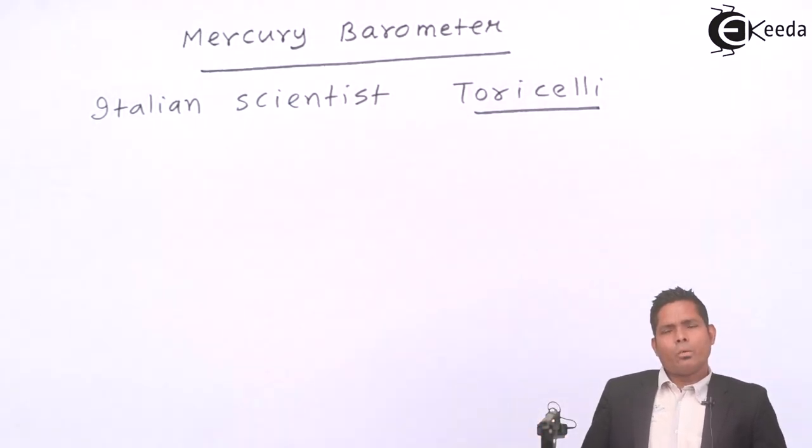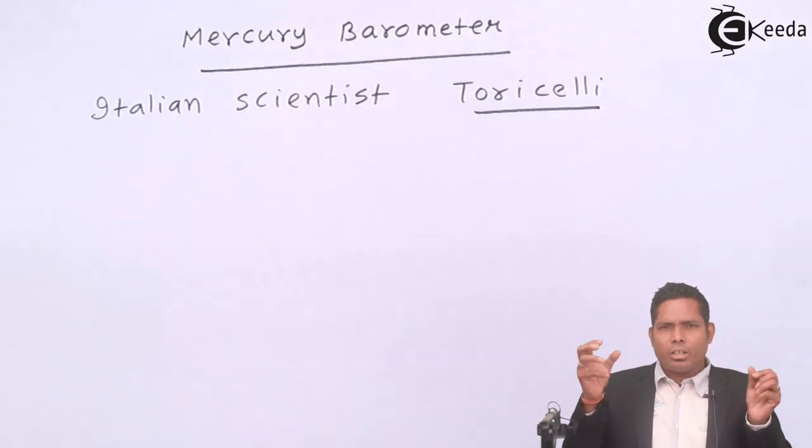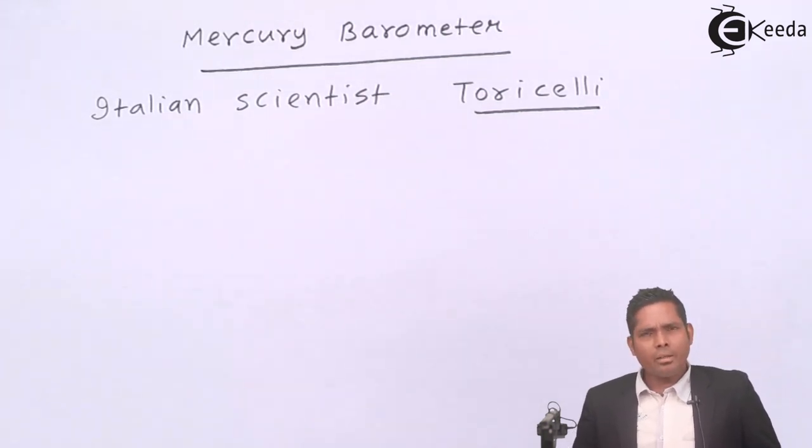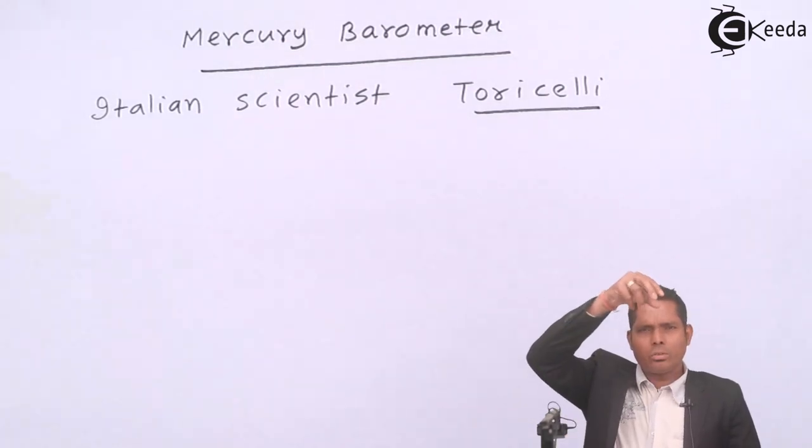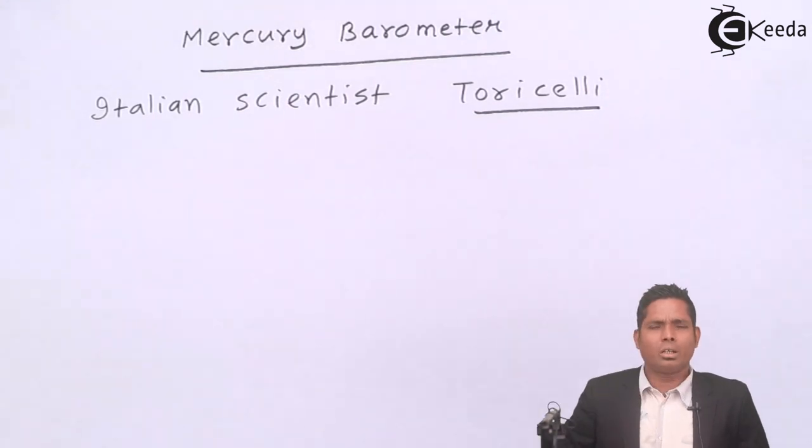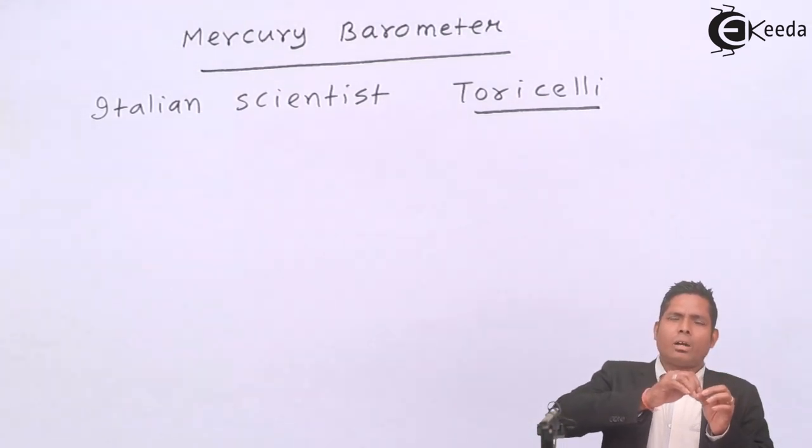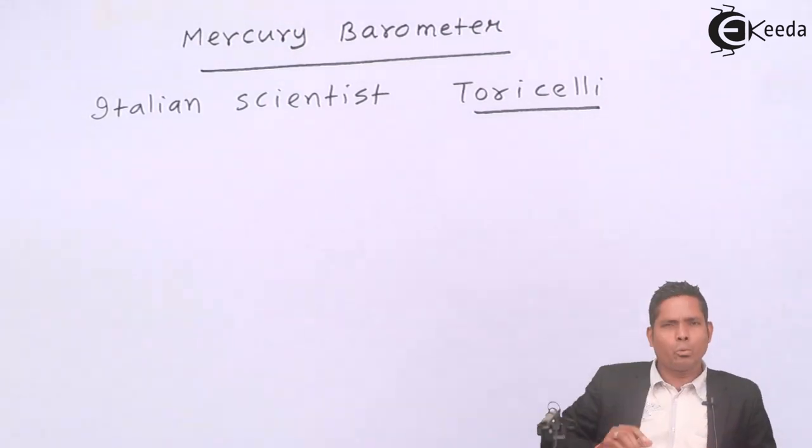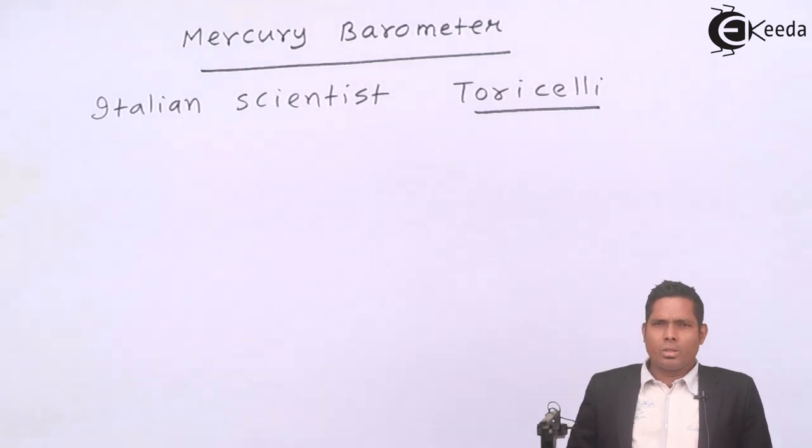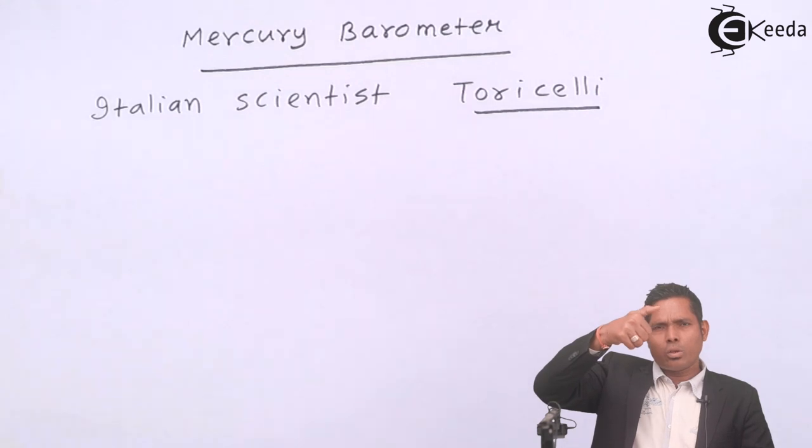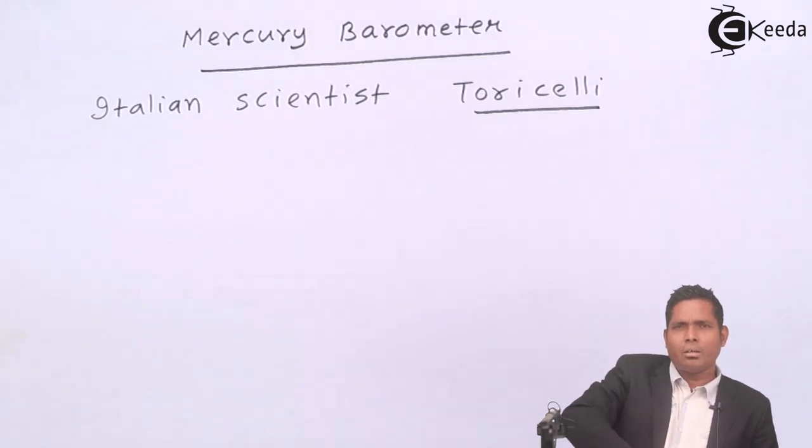He was trying to find the pressure of the atmosphere. So he devised a tube containing mercury. He took a very long tube, around 1 meter tube, filled with Mercury. And he took another vessel containing mercury. Then he filled the tube to the brim, closed it, closed the open end. Just filled with Mercury, closed it, and then inverted it, and then put it inside the Mercury vessel.